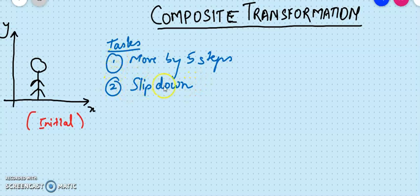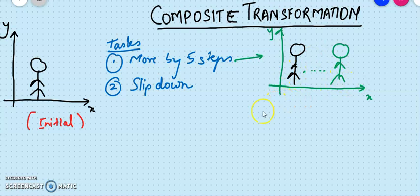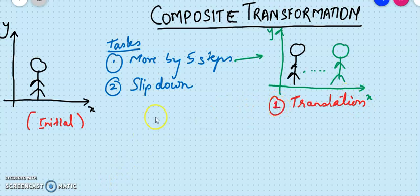So two tasks to be performed. If I look at the output of my first step — this is X and Y and this is the original position of the object — my final position of the object moving five steps ahead would be somewhere out here. So when I want to make this five steps ahead, that means I am using the transformation that is translation. This is my first step, and my second step says I need to make it look like it's slipping down.